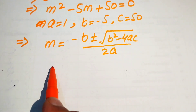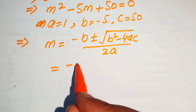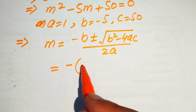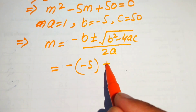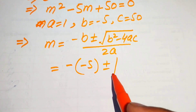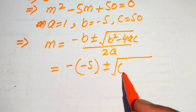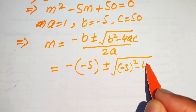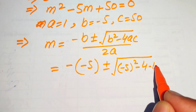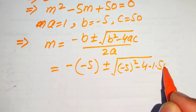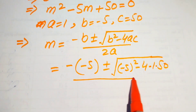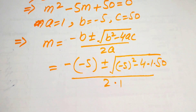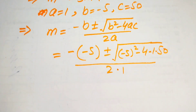Substituting the values: negative times b, where b is negative 5, plus or minus the square root of b squared — that is negative 5 squared — minus 4 times a, which is 1, times c, which is 50, all divided by 2 times a, where a equals 1.